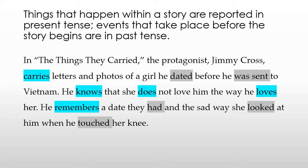However, some things happen before the story occurs. So he knew Martha and dated Martha at least once before he went to Vietnam. Here's an example that deals with that switching back and forth in an appropriate way: In 'The Things They Carried,' the protagonist Jimmy Cross carries letters and photos of a girl he dated before he was sent to Vietnam. He knows that she does not love him the way he loves her. He remembers a date they had and the sad way she looked at him when he touched her knee. So you do switch back and forth sometimes if it is appropriate.